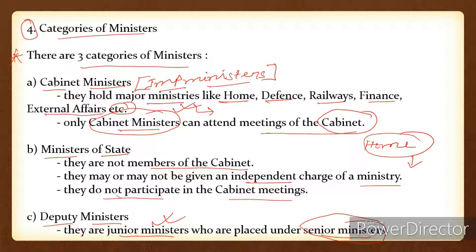So the three categories are: Cabinet Ministers, Ministers of State, and Deputy Ministers. One important thing to clarify is that all three of these categories together form the Council of Ministers. So when we talk about the Council of Ministers, it includes cabinet ministers, ministers of state, as well as deputy ministers.